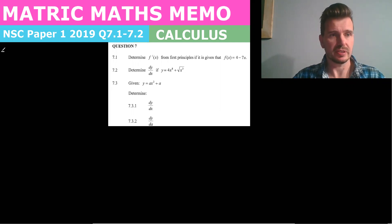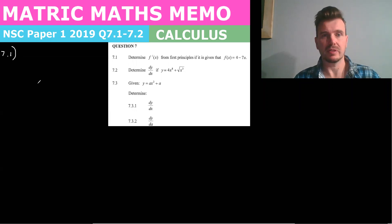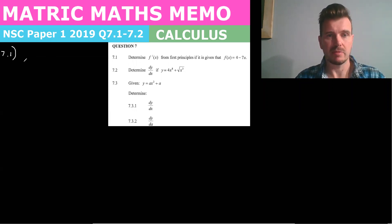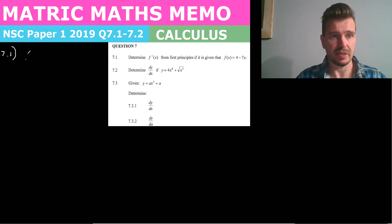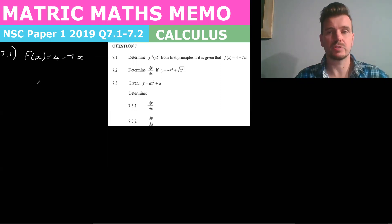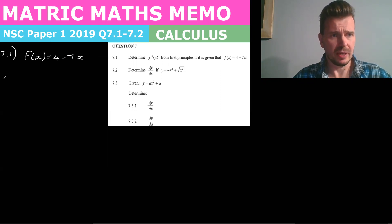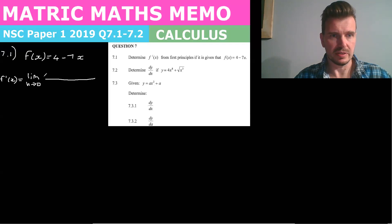So the first question — and there's one of these in every paper — is to determine f prime of x, determine the derivative of x, however you want to say it, from first principles given that f of x is equal to 4 minus 7x. We go to our formula sheet at the back of the paper and we find that from first principles we use this formula: the limit as h tends to zero of f of x plus h minus f of x, all over h.